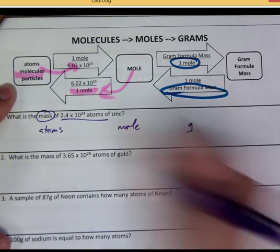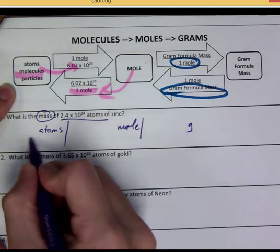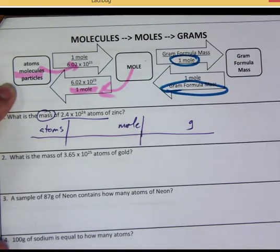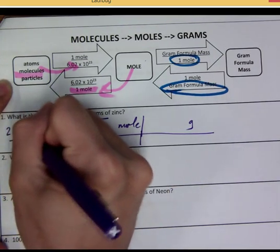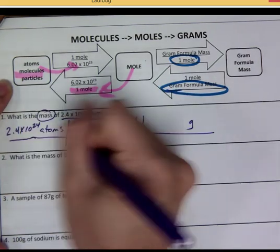All right, so once you have that, you can draw your little gritty here, gritty majiggy here, like that. Three steps. How many atoms did we start with? 2.4 times 10 to the 24th atoms of zinc.